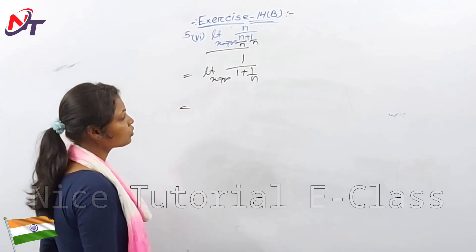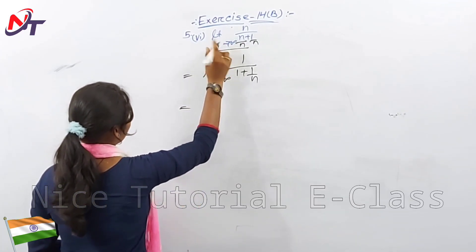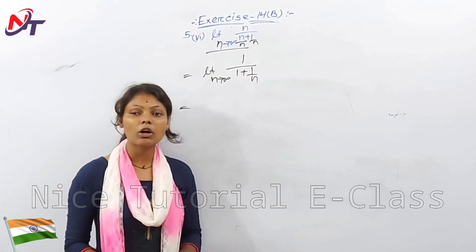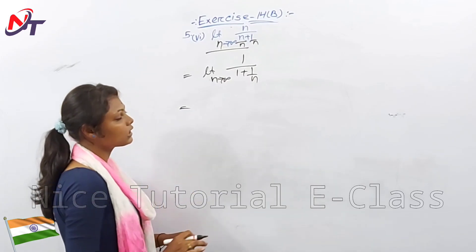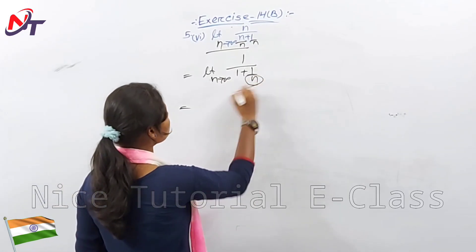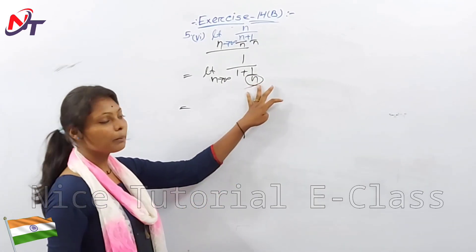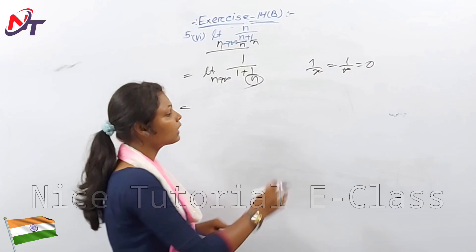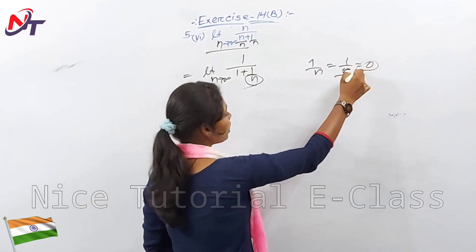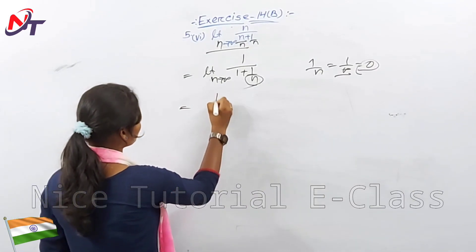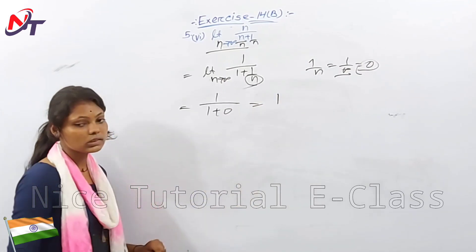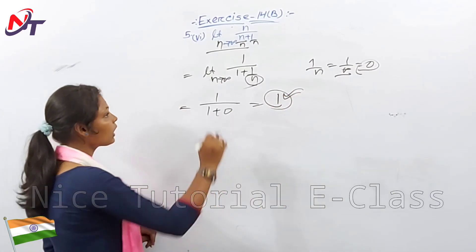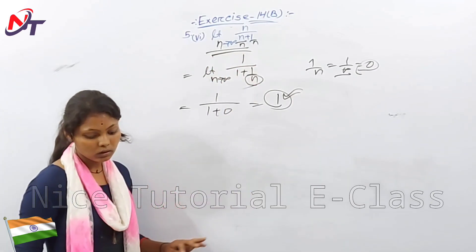Limit n tends to infinity of 1/(1 plus 1/n). As n tends to infinity, 1/n tends to 0. So the result is 1/(1 plus 0) = 1/1 = 1. The answer is 1.